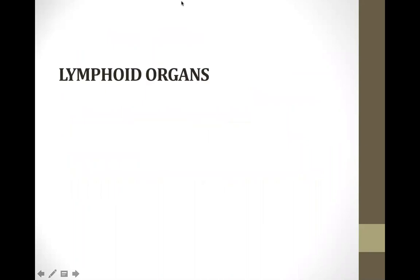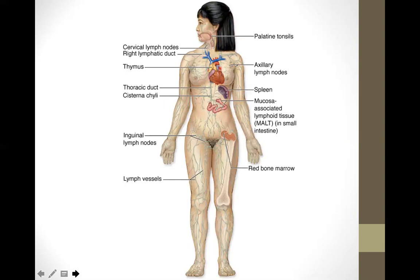Lymphatic tissues can be found in just one part of an organ, but for a lymphoid organ, the majority or all of that organ is composed of lymphatic tissue or lymphatic nodules. The following are the lymphatic organs: palatine tonsils, lymph nodes, thymus, spleen, inguinal lymph nodes, and mucosa-associated lymphoid tissue found in the small intestine. The red bone marrow is not a purely lymphatic organ.